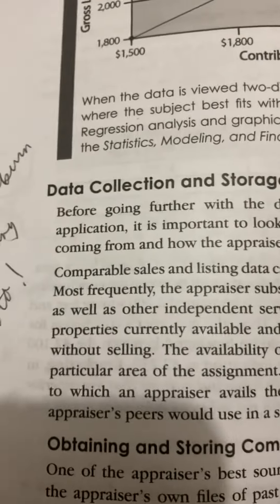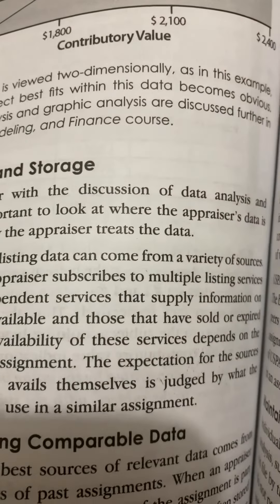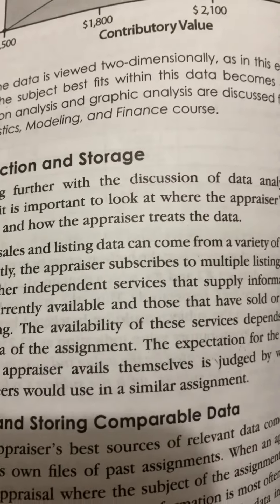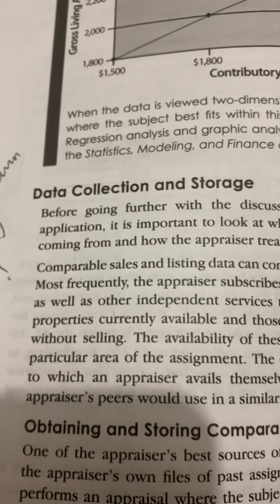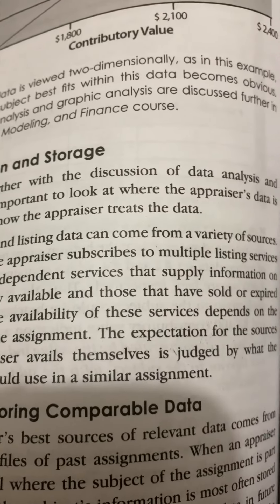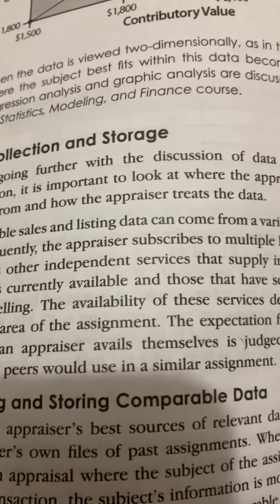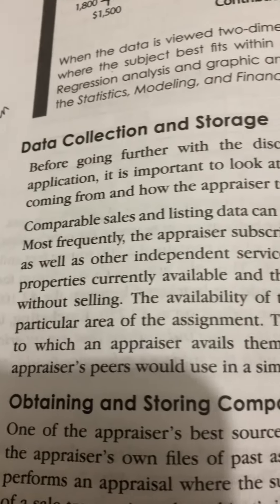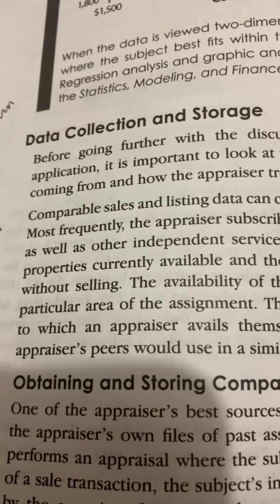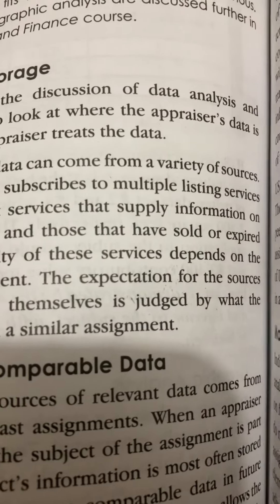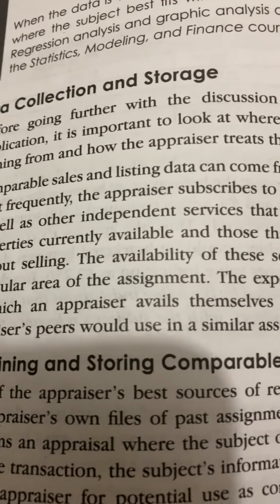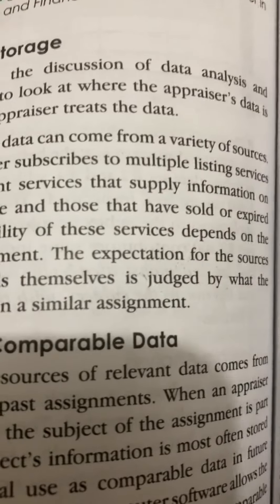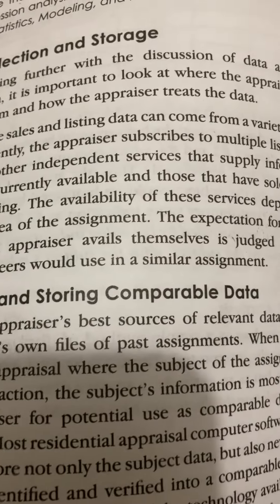Data Collection and Storage. Before going further with the discussion of data analysis and application, it is important to look at where the appraiser's data is coming from and how the appraiser treats this data. Comparable sales and listing data can come from a variety of sources. Most frequently, the appraiser subscribes to multiple listing services, as well as other independent services that supply information on properties currently available and those that have sold or expired without selling. The availability of these services depends on the particular area of the assignment. The expectation for the sources an appraiser avails themselves of is judged by what the appraiser's peers would use in a similar assignment.